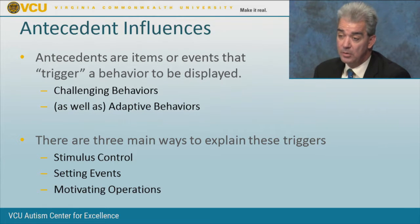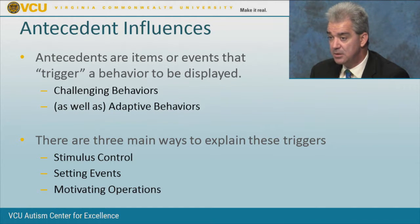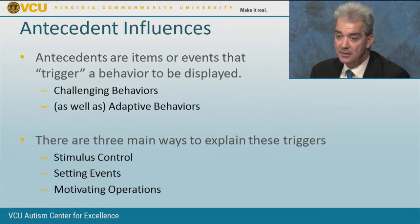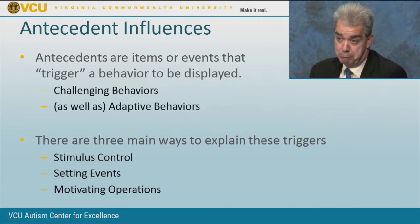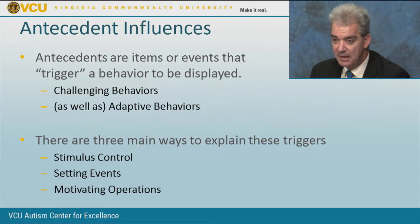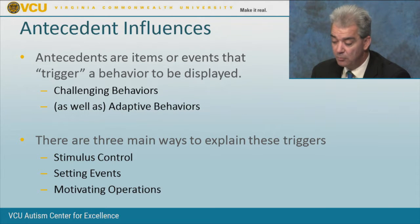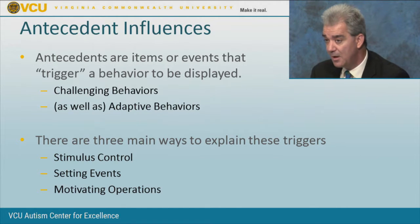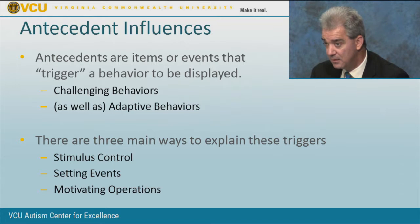We can change the antecedents that trigger the behavior — for example, avoiding sexual education class with Sean will reduce him insulting the teacher to get sent to the office. But that has an impact on his adaptive behavior because he's not learning that curriculum content. Many behavior analysts focus only on antecedent manipulations, but the problem is we really don't deal with the functional relationship between the problematic behavior and the consequences that follow.